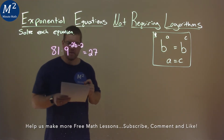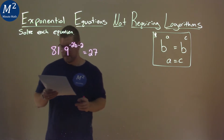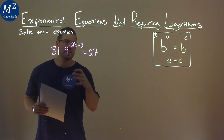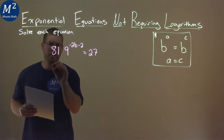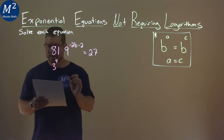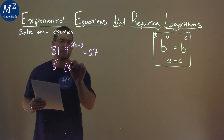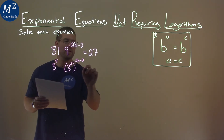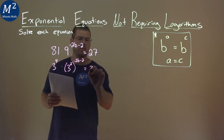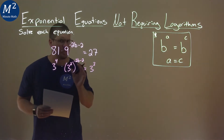Well, each one of these — the 81, the 9, and the 27 — can be written as 3 to some power. 81 is 3 to the 4th power, 9 is 3 squared but keep the rest, negative 2b minus 2, in the exponent, and 27 is 3 to the 3rd power. That's going to be important soon.